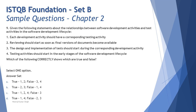Getting started with question number nine: given the following statements about the relationship between software development activities and test activities in the software development life cycle. If you remember, we heard and understood about the good characteristics of testing which can be applied to any development model in chapter two, topic 2.1. There we understood about the four standard good characteristics of testing, and they are trying to ask you the same thing.